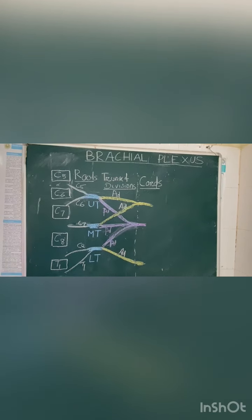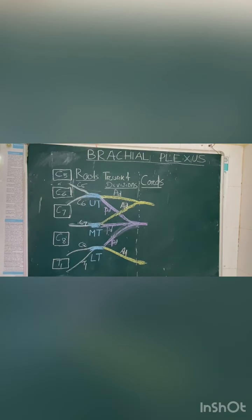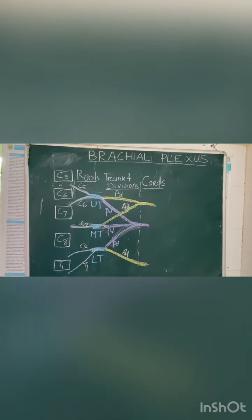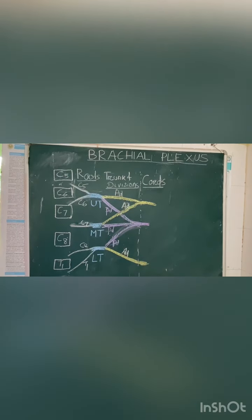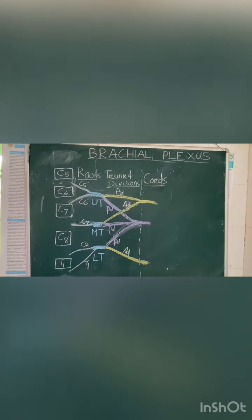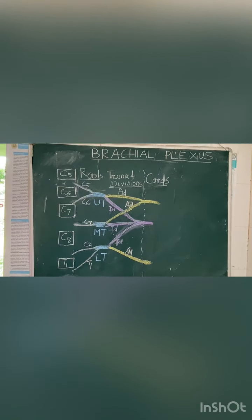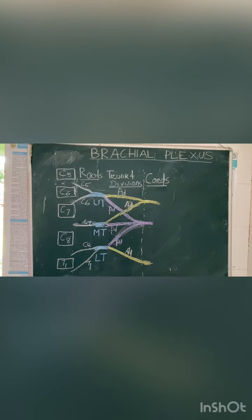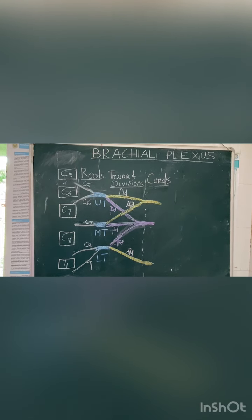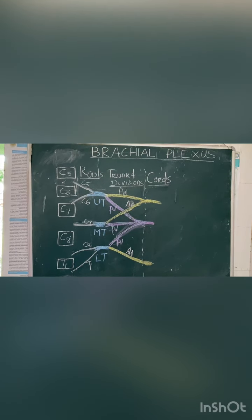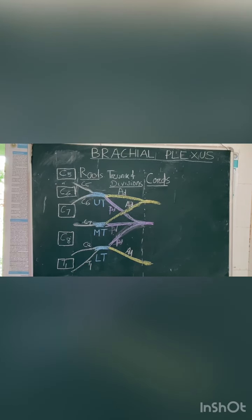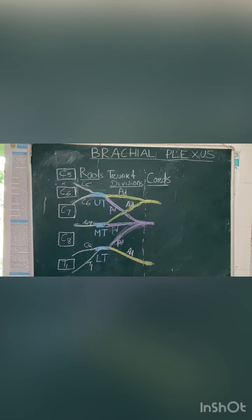Each trunk is divided into an anterior division and a posterior division. The anterior division of the upper trunk and the middle trunk unite to form the lateral cord. The anterior division of the lower trunk continues as the medial cord, and the posterior divisions of all three trunks unite together to form the posterior cord.